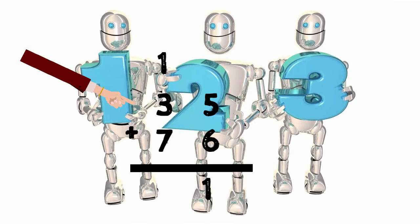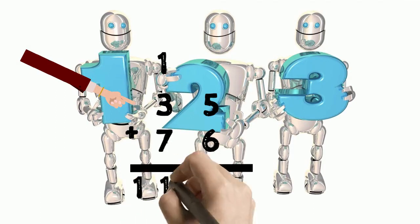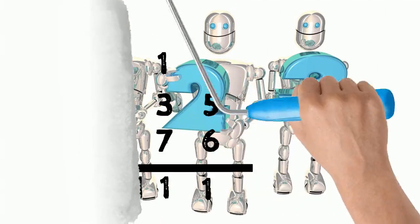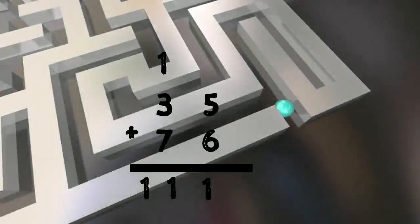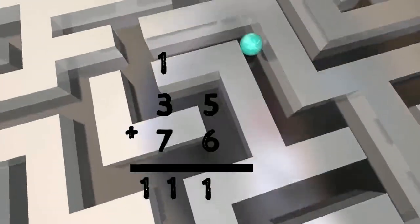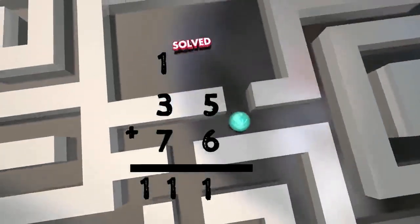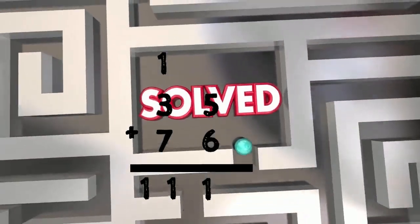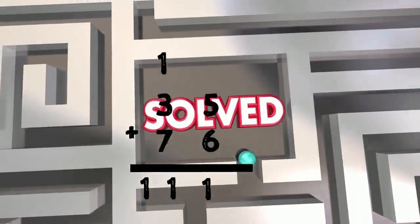Then we'll add the tens: 3 plus 7 plus that one that we carry, which equals 11. So the answer of 35 plus 76 is 111.